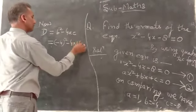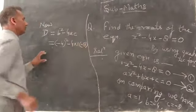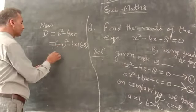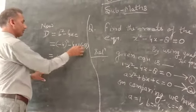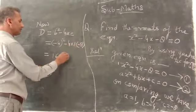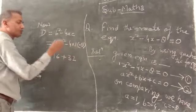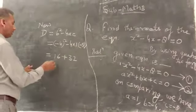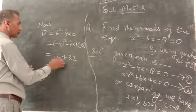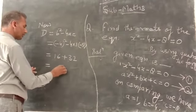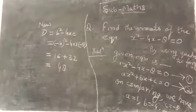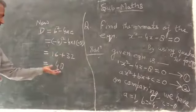So now D = (-4)² - 4(1)(-8). That's 16 + 32, which equals 48.